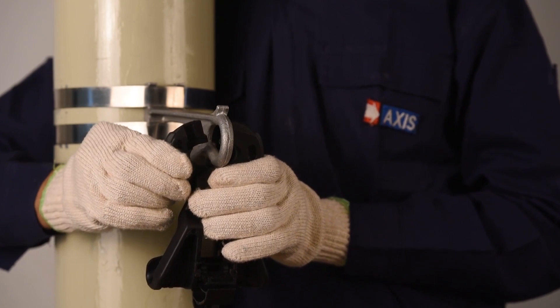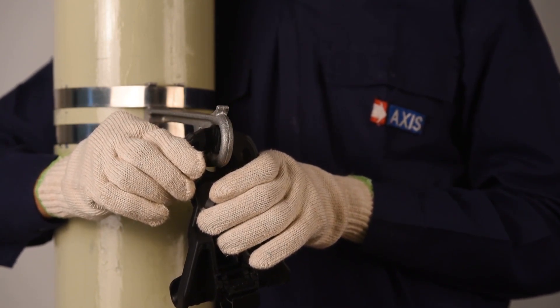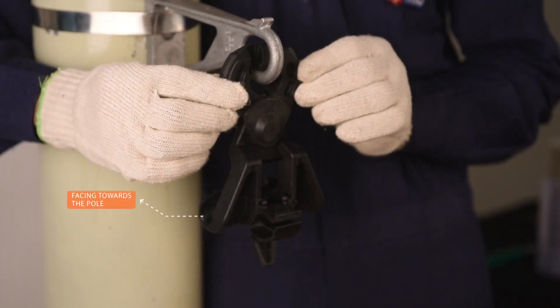Clamp the open ends of the movable link into the eye of the bracket to complete the assembly. Make sure that the cable holding portion is facing towards the pole and not the outward side.